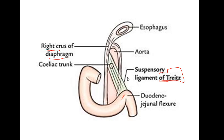The suspensory ligament of Treitz is located between the 4th part of the duodenum (the duodenojejunal flexure) and the right crus of the diaphragm. This is clinically significant: any bleeding proximal or superior to this ligament is called upper GI bleeding, while any bleeding below it is called lower GI bleeding. This important surgical concept of upper versus lower GI bleeding is based on this anatomical landmark.